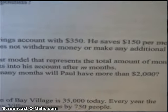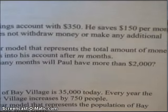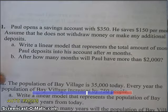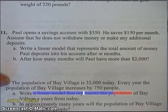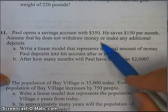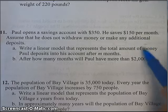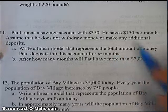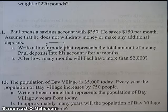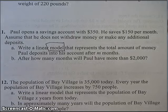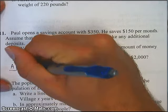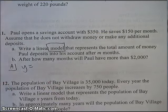The last thing I want to talk about are linear word problems. And I'm just going to pick one at random here. I like this one. The savings account. And so let's talk about the savings account problem. Paul opens the savings account with $350. He saves $150 per month. Assume that he does not withdraw money or make any additional deposits. Write a linear model. That word model simply means equation. Write a linear model that represents the total amount of money Paul deposits into his account after M months.